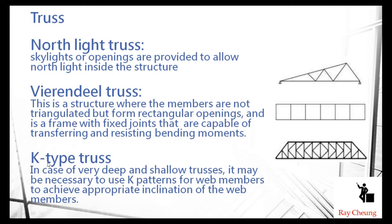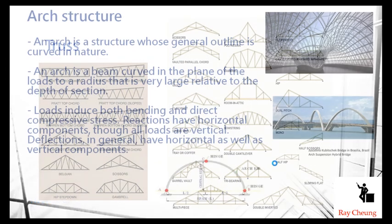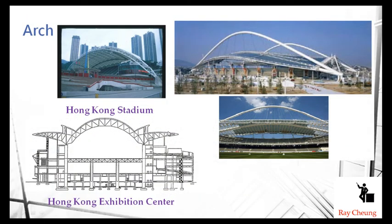There are various truss types. One type is the so-called Vierendeel truss, which has fixed joint connections, meaning the joints have much more strength. You can also see the clay truss and other forms of light truss. Another form is the arch, which is a very typical archetype. You can see many structures using the arch form rather than a simple beam. The Hong Kong stadium also uses an arch.